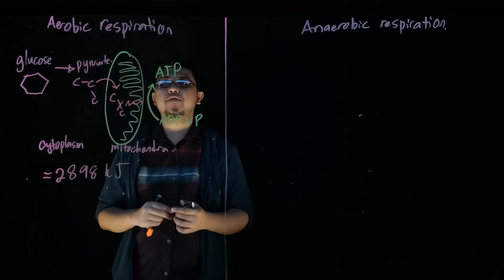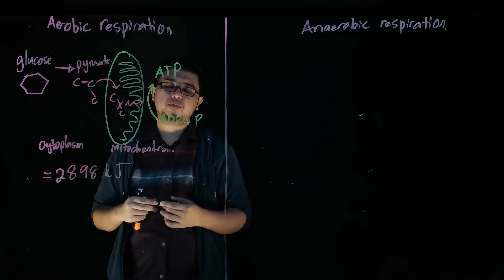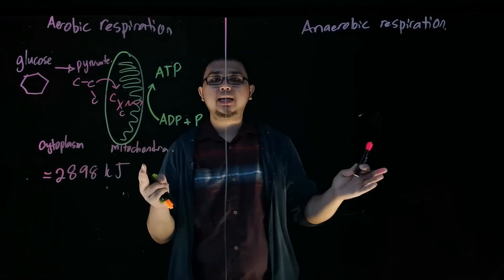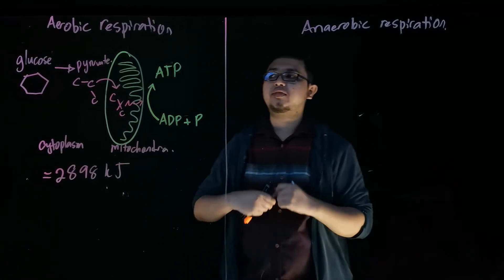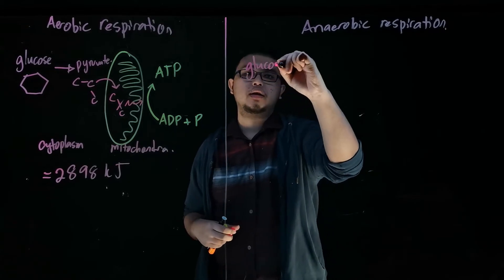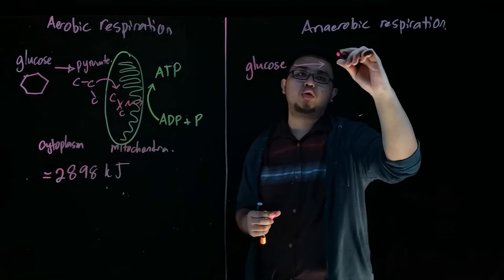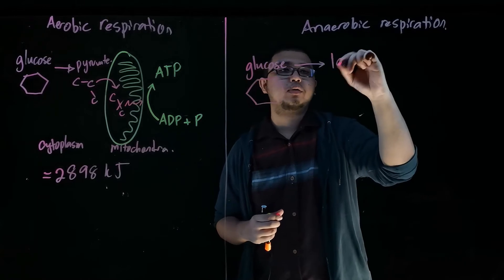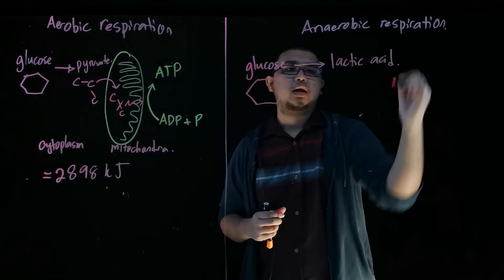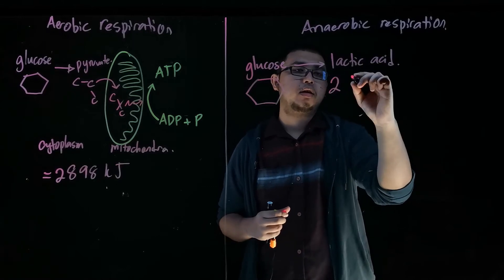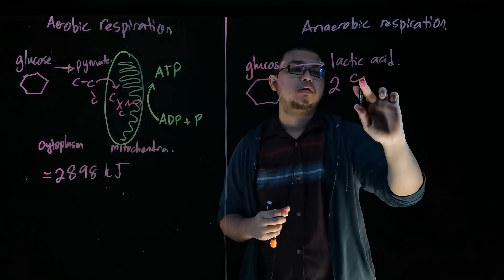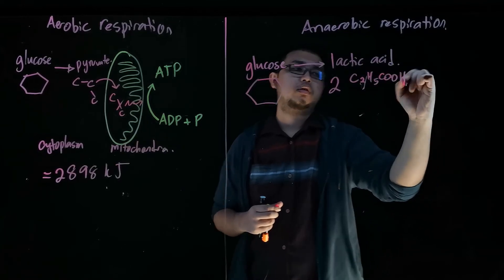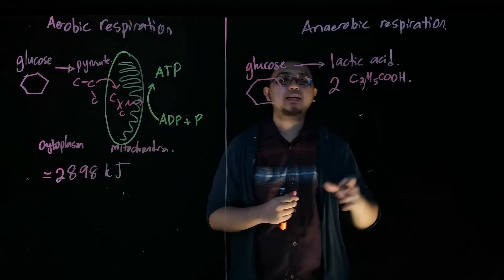When we take a look at anaerobic respiration, the mitochondria is completely removed from the equation. The glucose molecule is straight away converted into lactic acid. From your six-ring carbon, it's broken down into a three-carbon form, and this is lactic acid.